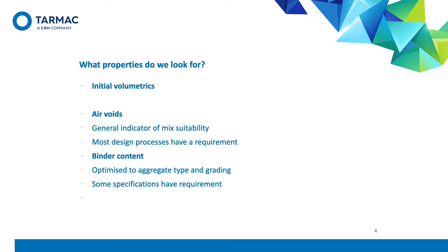Properties we look for in asphalt include initial volumetrics — the start point to determine the correct aggregate grading and binder content to deliver optimal performance. This becomes your target composition. Air voids are usually a good indicator of mix properties: too high will allow ingress of water, and too low can result in an unstable mix. Most design processes have a requirement for a minimum and/or maximum void content and binder content, which is optimized to the aggregate type and grading of the mix.